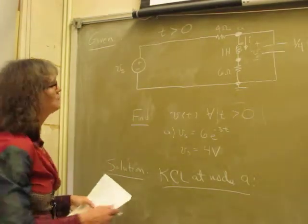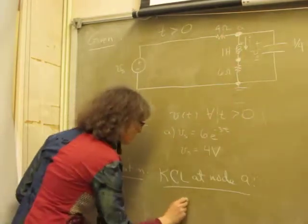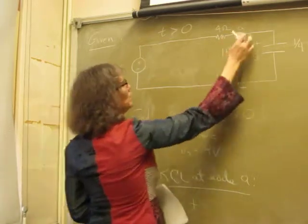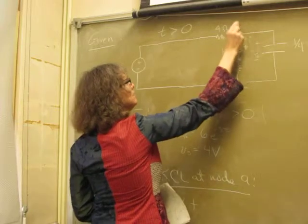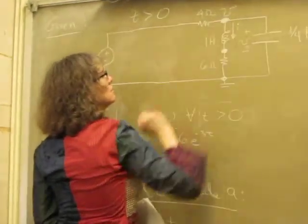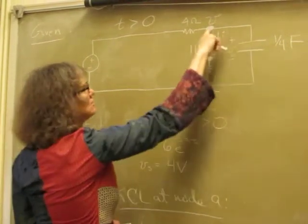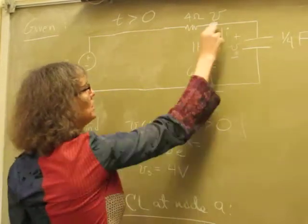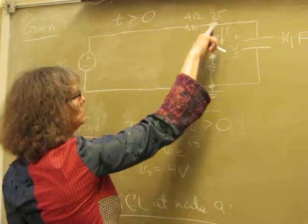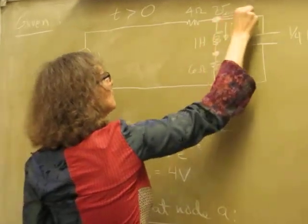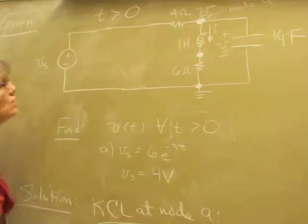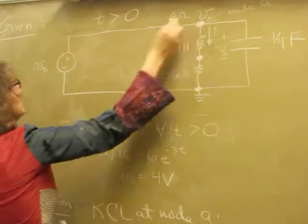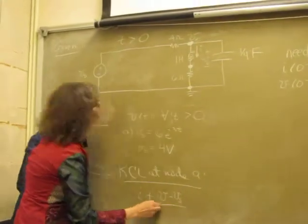So what do I have? I've got this current here, I, leaving the node. And then whatever this voltage is — this is node A, but if I labeled it with a node voltage, it's V. That voltage is V because this branch with respect to the ground or reference node is parallel to the voltage across the capacitor. So I could label this: this is node A, but the node voltage is V. So the current leaving that node is V minus Vs over 4.